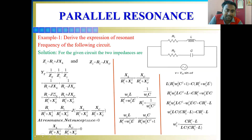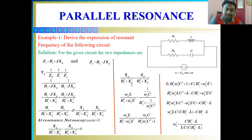The imaginary part of the first term is minus jXL divided by (R1² + XL²), and the imaginary part of the second term is plus jXC divided by (R2² + XC²). Taking minus j as common, the imaginary component becomes XL/(R1² + XL²) minus XC/(R2² + XC²). At resonance the net susceptance equals zero, so I equate this imaginary component to zero.